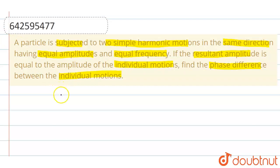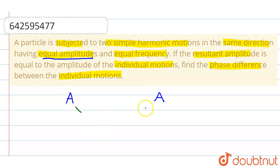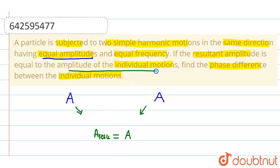Let the amplitude of the first SHM be A and the amplitude of the second SHM also be A, as both have equal amplitudes. The resultant of the superposition of these two equations gives a resultant amplitude equal to the amplitude of the individual motions.